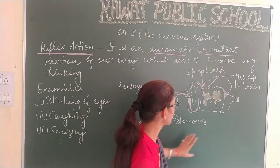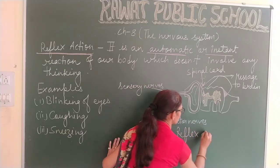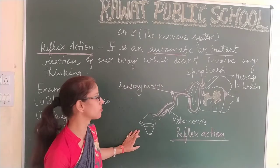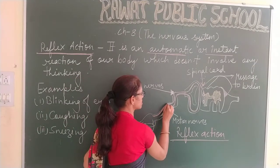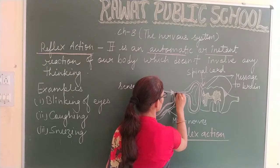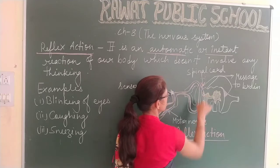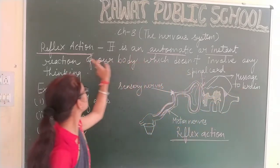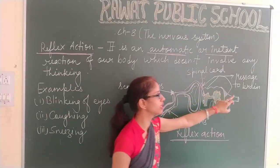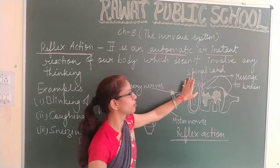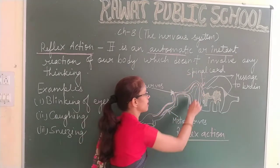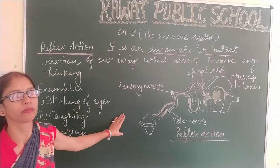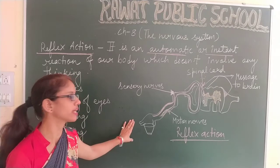We can understand this with the help of this diagram. This is the diagram of reflex action. If we touch any hot object or any hot cup of tea by mistake, so through these sensory nerves, the message is carried from this hand to our spinal cord. From the spinal cord, the message is normally sent to the brain, but in reflex action the message does not go to the brain. Instead, the instruction from the spinal cord is sent back to the hand through the motor nerves, to remove our hand or finger from that particular hot object and protect our hand.